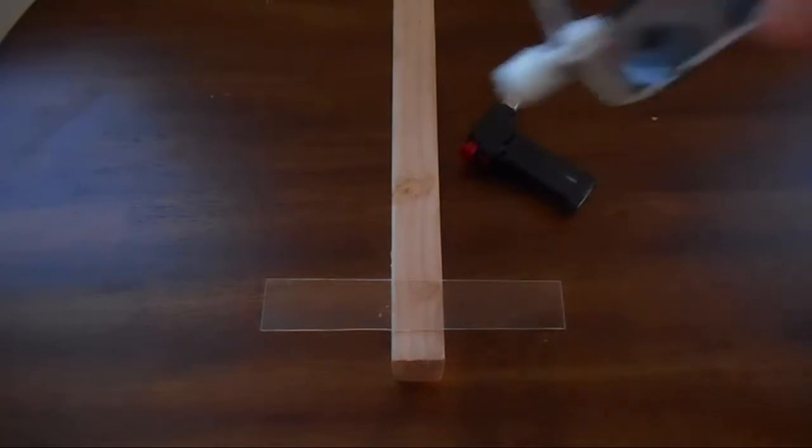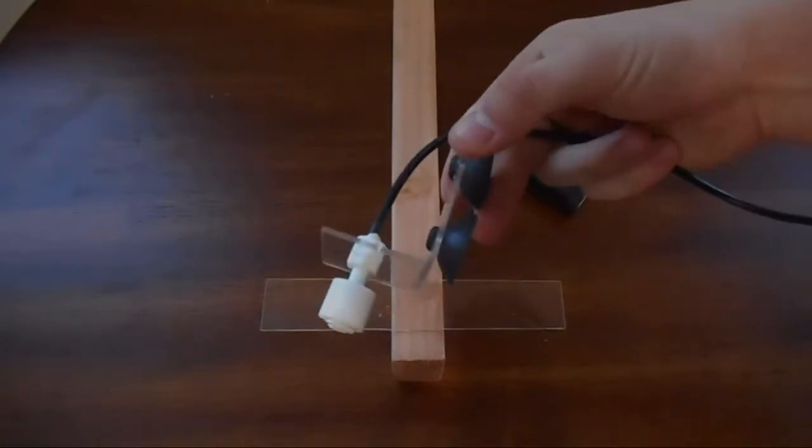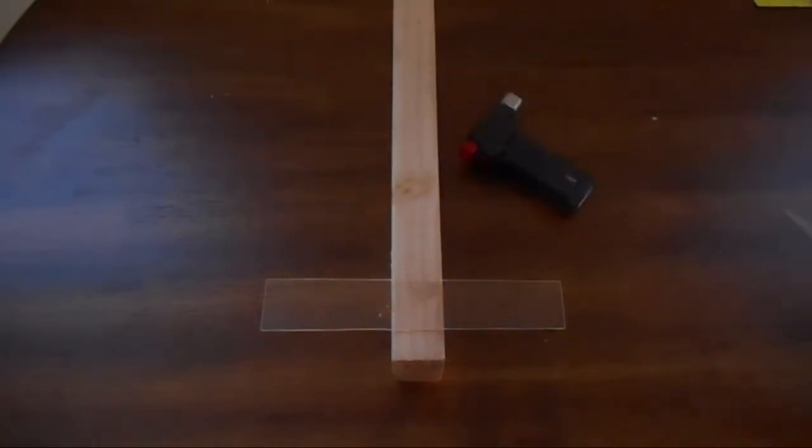Now we just need to make our bend. Let's take a quick look at the original float switch. As you can see it's just going to be the one bend there. We're going to use this 2x4 to assist us in heating and bending, and then holding the acrylic in place while it cools down. So you just have to determine where you want to bend it.